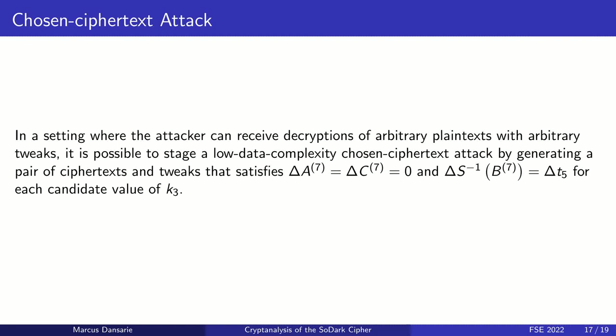The known plaintext attacks require a relatively large amount of data, but they can be converted to chosen ciphertext attacks with very low data complexities. This is possible since it is easy to generate pairs of ciphertexts that will cause the required collision with high probability. Only one pair of ciphertexts is required for each candidate value for key byte 3. In other words, with 256 generated pairs, the probability of success of the chosen ciphertext attack is 100%. The attack complexity compared to the known plaintext attack is also slightly lower.